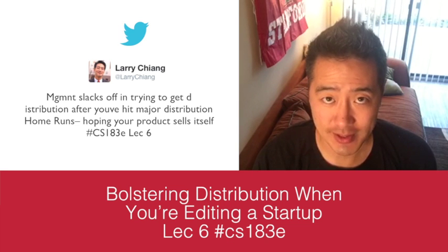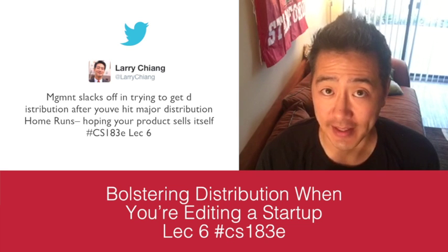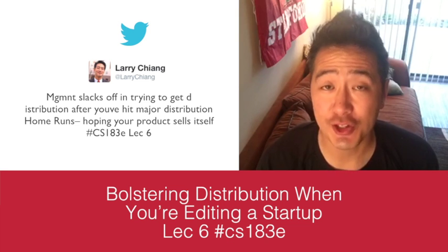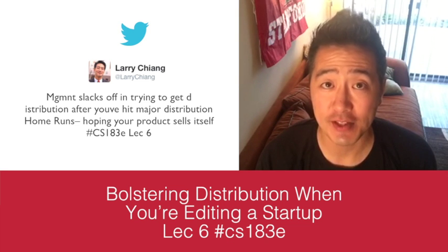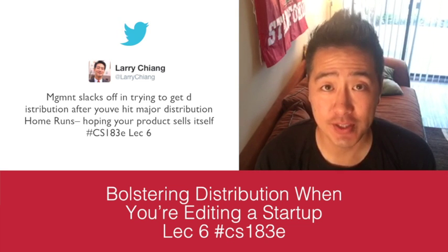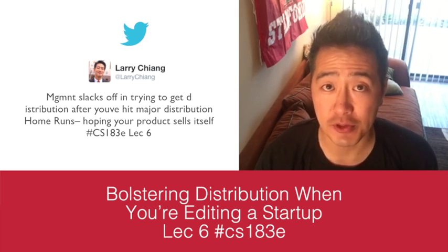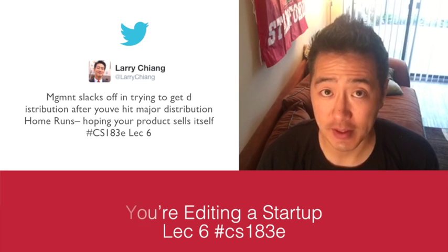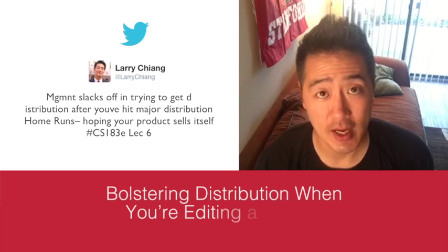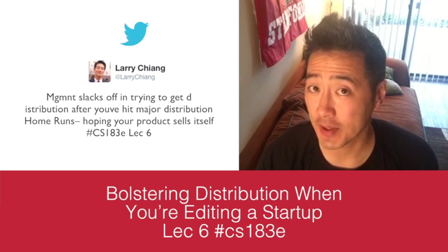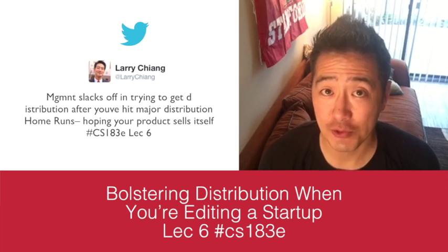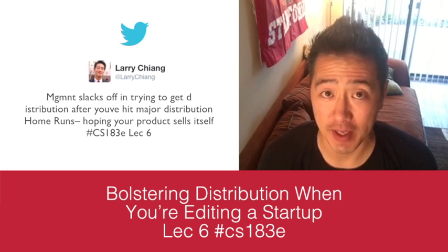CS183E Lecture 6 is an extension — a sequel lecture — to Lecture 9 of CS183, Peter Thiel's lecture, which talks about distribution. CS183, not to be confused with CS183E, and also not to be confused with Peter Thiel's Lecture 5, CS183B.